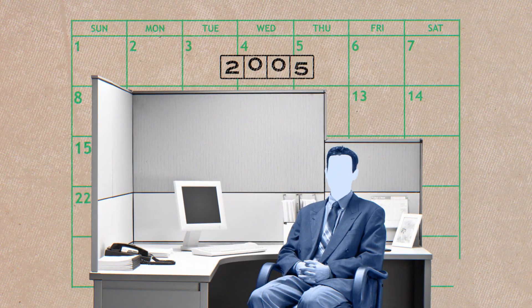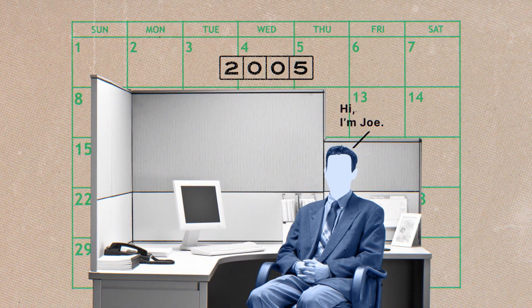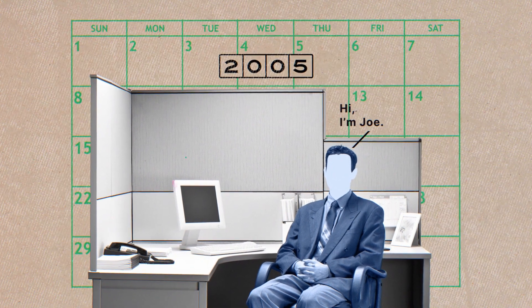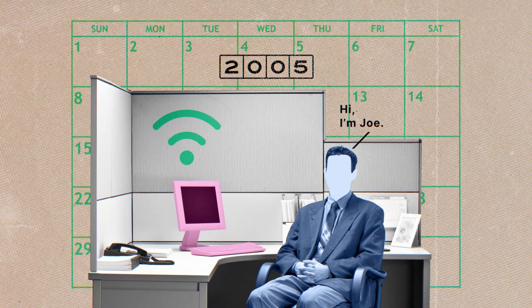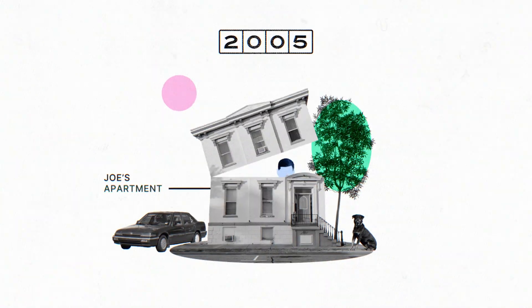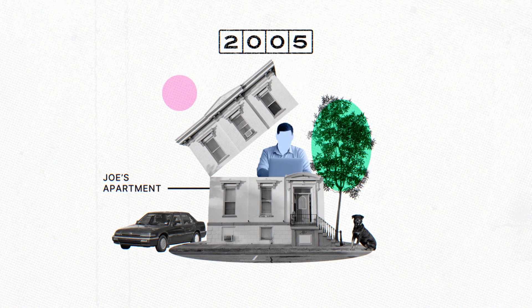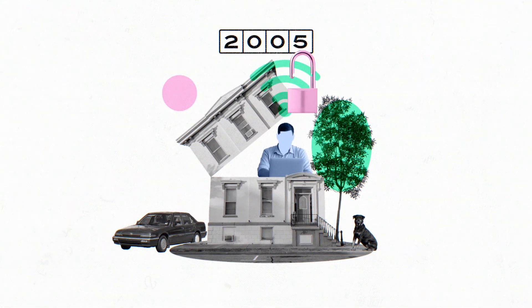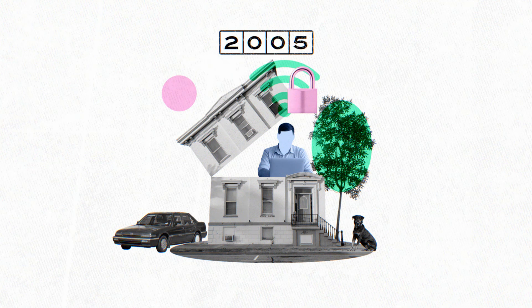The year is 2005, and our friend Joe is at work in his company's office. When he logs into his computer, he's connected to his company's network, where he can access the tools he needs. But what if Joe needs to work from home? No problem — he can remotely connect to the network using a VPN, which keeps his traffic secure. Things are going great.